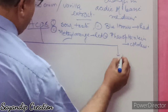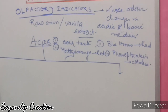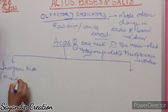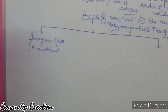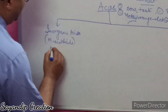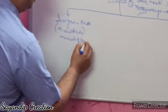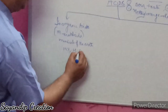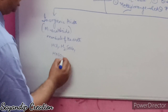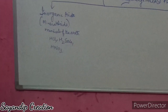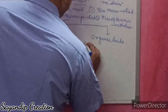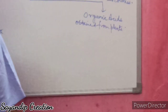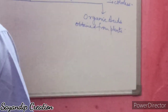Acids are categorized into two types. One is inorganic acids, also called mineral acids, which are obtained from the minerals of the earth. Examples include HCl (hydrochloric acid), H2SO4 (sulfuric acid), and HNO3 (nitric acid). The second type is organic acids, which are obtained mainly from plants or animals.